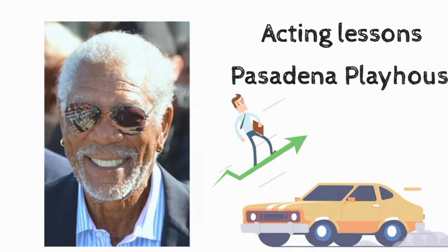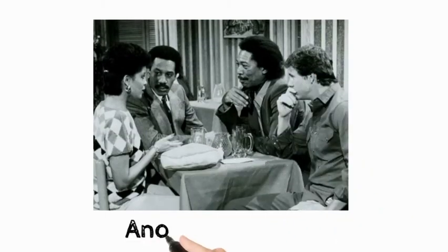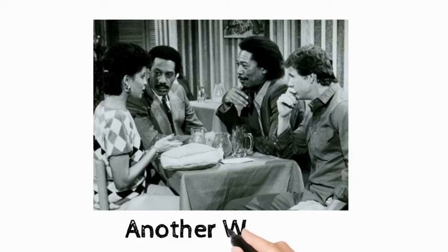Freeman started his film career by acting in the famous TV show Another World, and in the mid-80s he started to play supporting roles in many films.